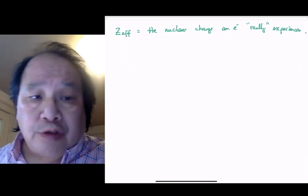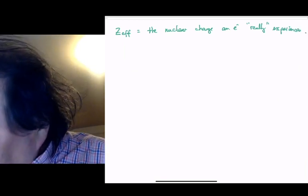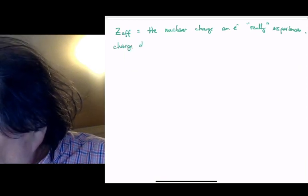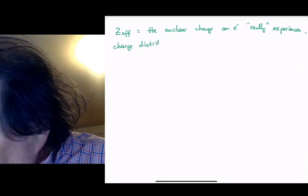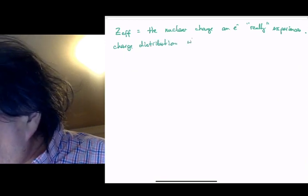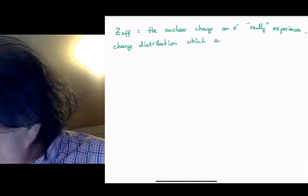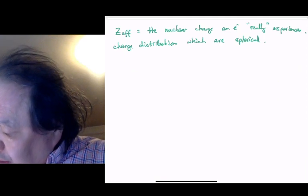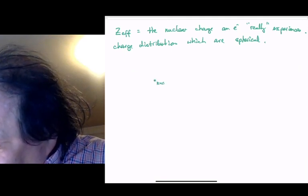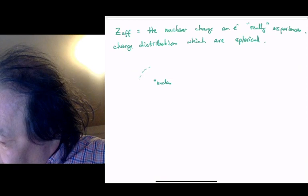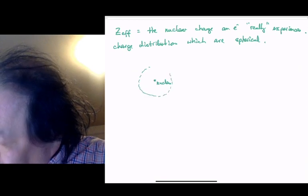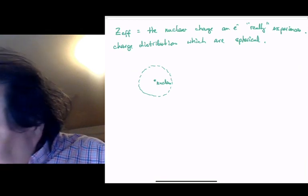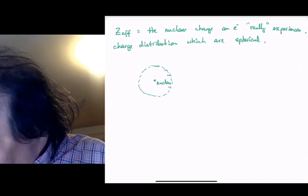We'll understand the concept of Z-effective for charge distributions which are spherical. What do I mean by spherical charge distribution? Here is a nucleus with some electrons in a charge distribution spread equally everywhere around the circle.